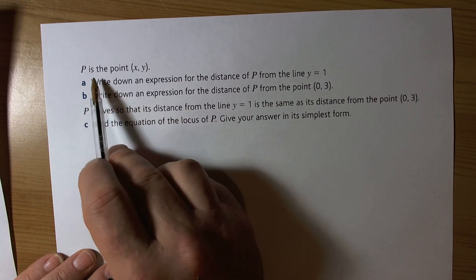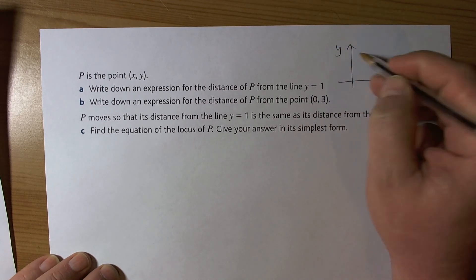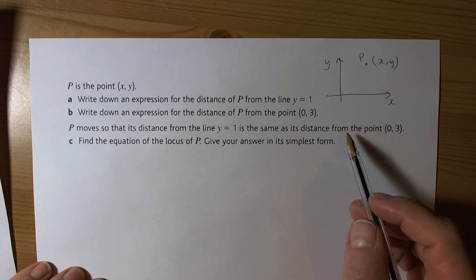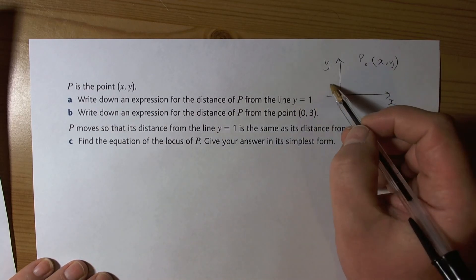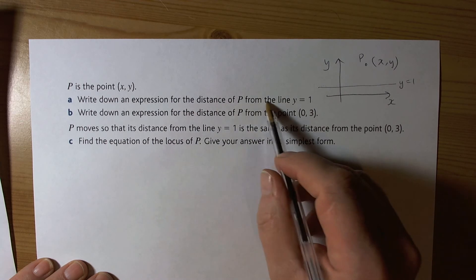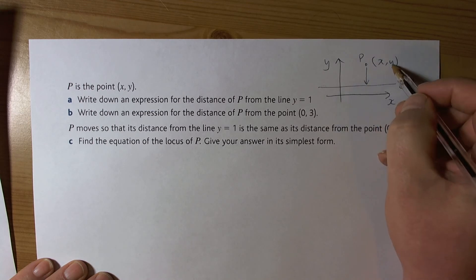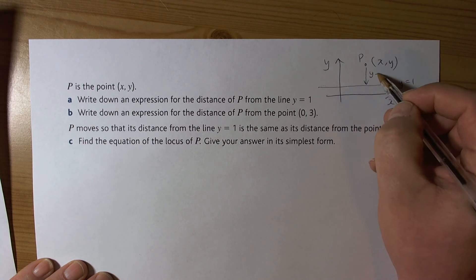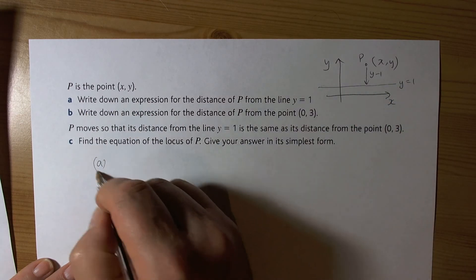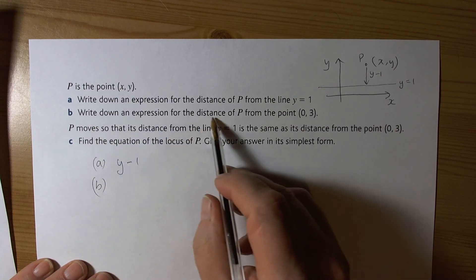Let's go through the answer to this example. Point P is at (x, y) — imagine that on coordinate axes. Part (a): write down an expression for the distance of P from the line y=1. Sketching y=1, the distance is y minus 1, because we go from y down to 1.